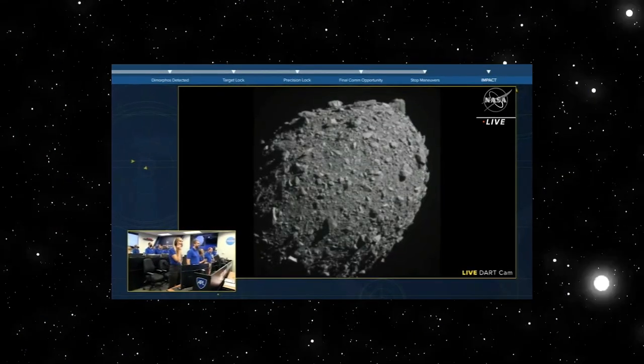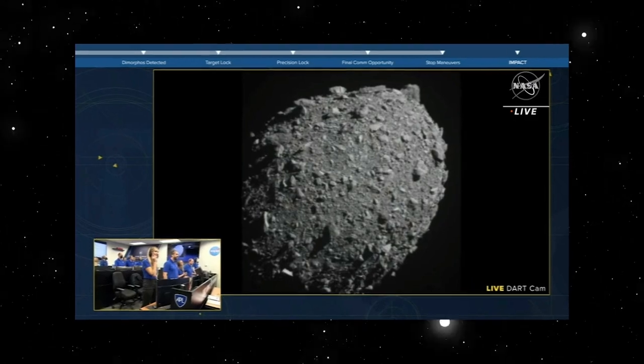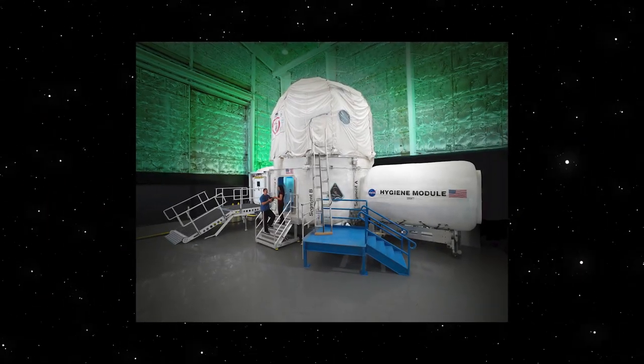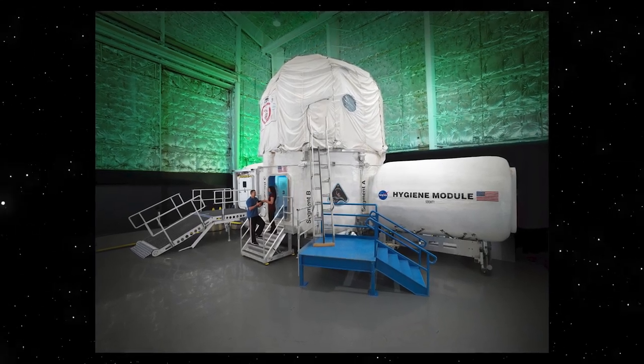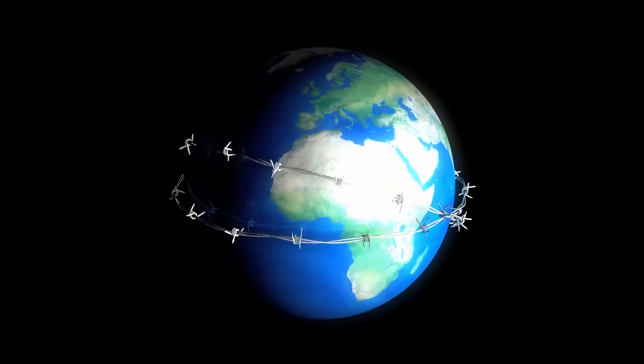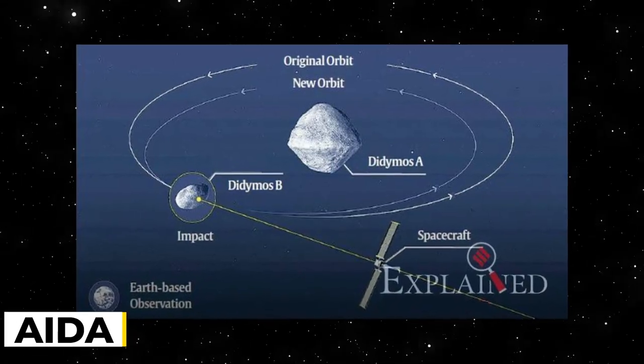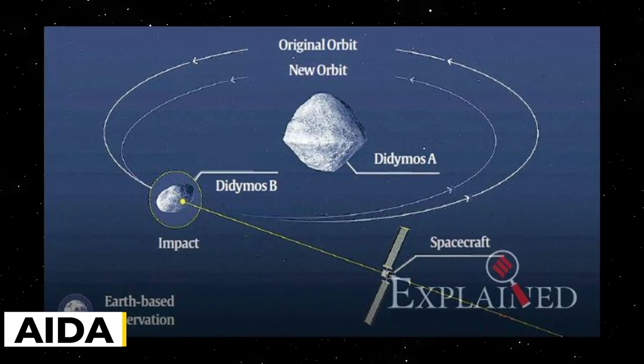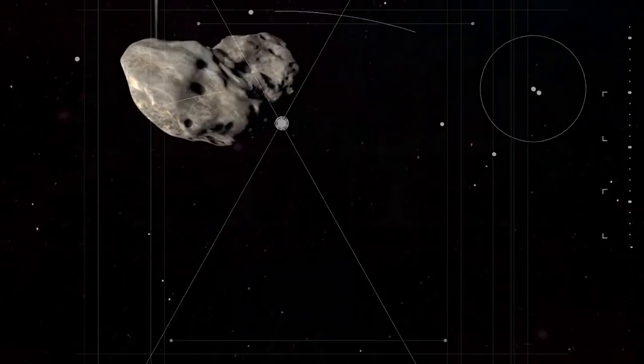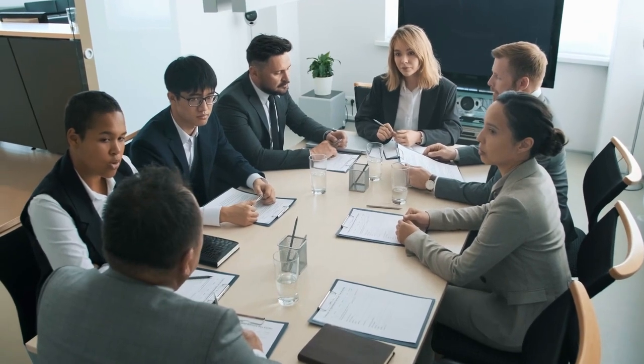Another goal of the HERA mission is to figure out the exact mass of Dimorphos. Despite the fact that DART and HERA are two separate missions with autonomous designs and operations, working together, they will improve our knowledge of planetary defense technology. A worldwide partnership called AIDA, which is Asteroid Impact and Deflection Assessment, includes team members from both missions.